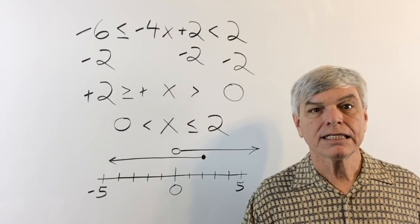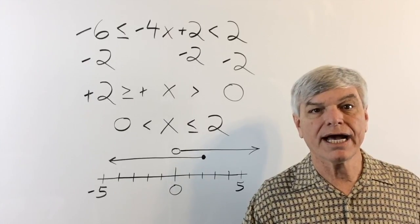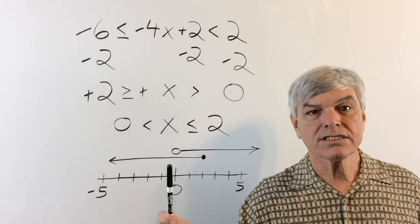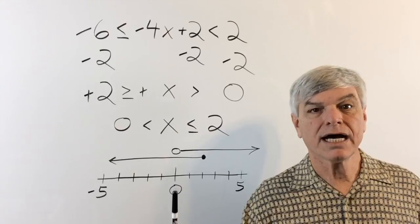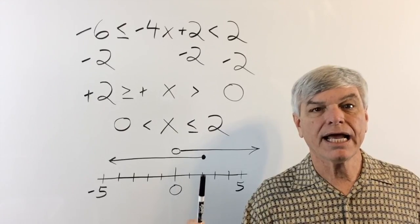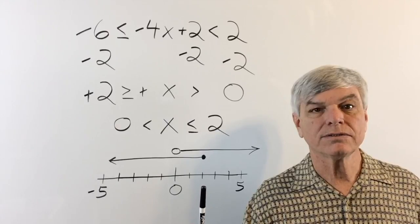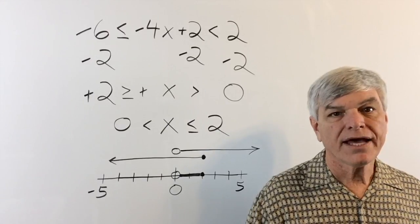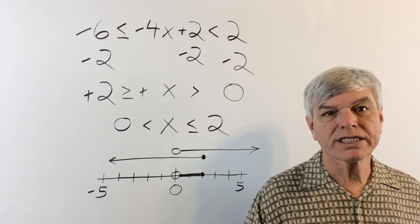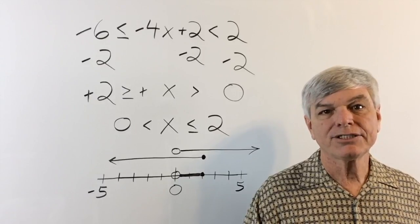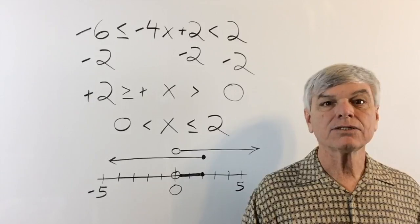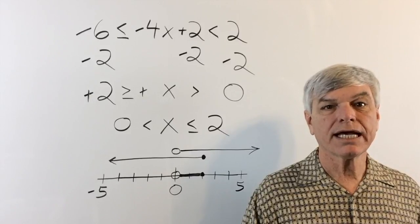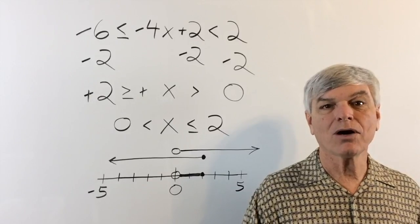Let's graph that. Graph x is less than or equal to 2: filled dot at 2, line going to negative infinity. Graph x is greater than 0: open circle at 0, line going to positive infinity. The overlap starts at 0 — not including 0 — and ends at 2, including 2. That segment from 0 to 2 is the solution.